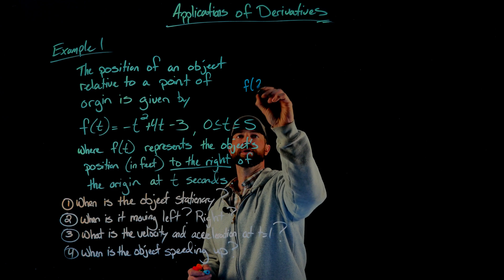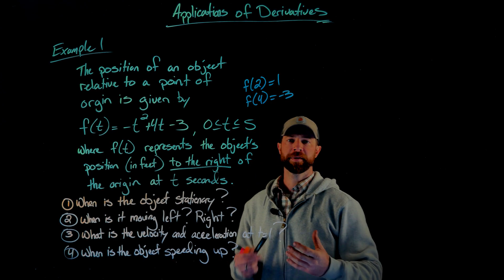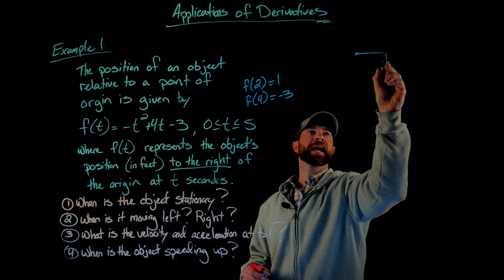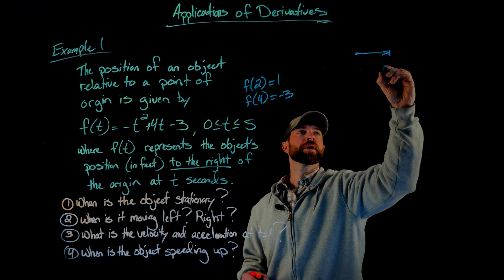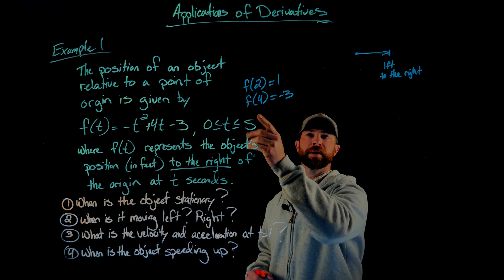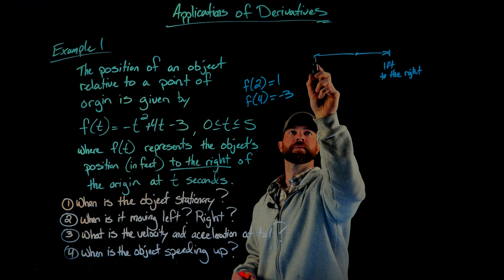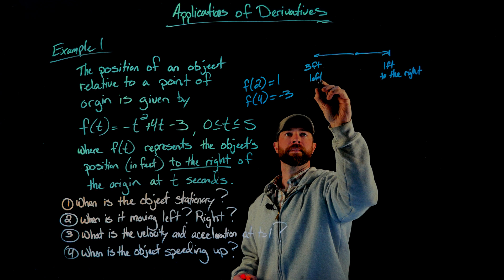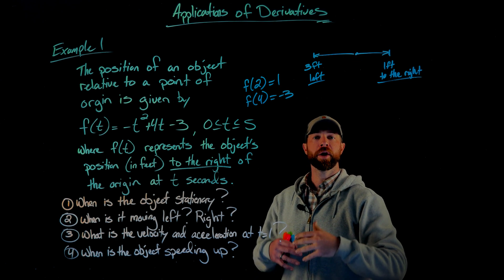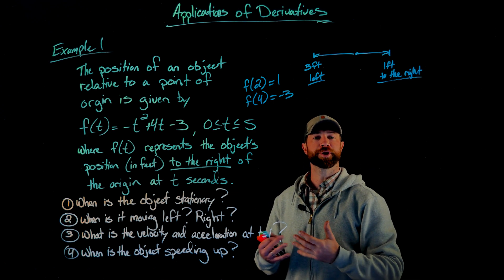If we plug in a 2 into this function, we get out a 1. If we plug in a 4 into this function, we're going to get out a negative 3. Visually, what that's representing is there's some origin point, and what this value means is that after 2 seconds, this object is 1 foot to the right. After 4 seconds, the object is 3 feet to the left. So this object is oscillating left and right relative to the origin point. Positive output values mean we're to the right of that origin point; negative output values mean we're to the left.